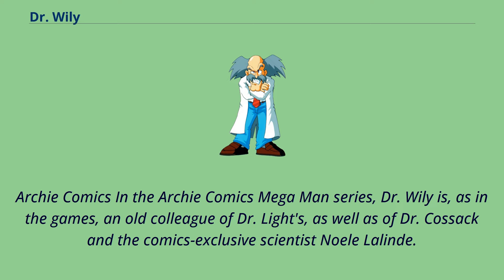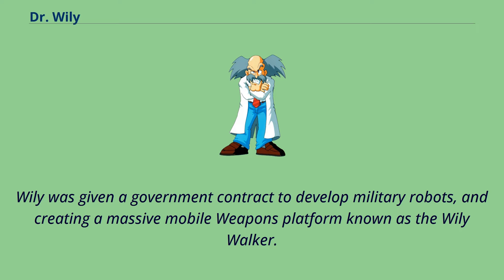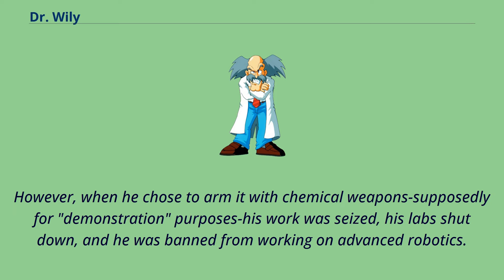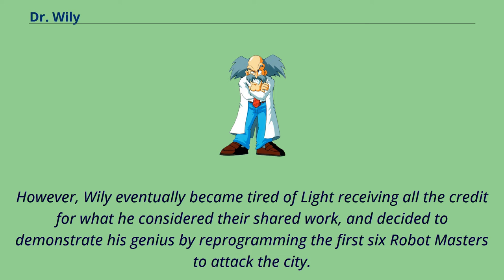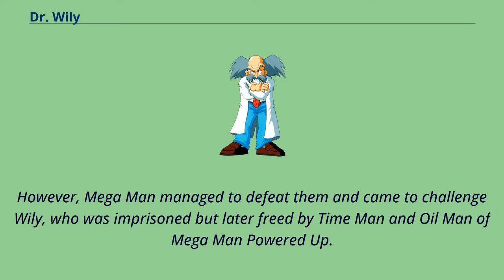In the Archie Comics Mega Man series, Dr. Wily is, as in the games, an old colleague of Dr. Light's, as well as of Dr. Cossack and the comics-exclusive scientist Noel Lalland. Wily was given a government contract to develop military robots, creating a massive mobile weapons platform known as the Wily Walker. However, when he chose to arm it with chemical weapons supposedly for demonstration purposes, his work was ceased, his lab shut down, and he was banned from working on advanced robotics. Wily managed to find a loophole by convincing his old friend Dr. Light to help him participate in the design of the Robot Masters, in particular providing input on the development of Blues. However, Wily eventually became tired of Light receiving all the credit, and decided to demonstrate his genius by reprogramming the first six Robot Masters to attack the city. Mega Man managed to defeat them and came to challenge Wily, who was imprisoned but later freed by Time Man and Oil Man of Mega Man Powered Up.